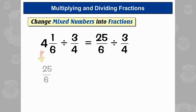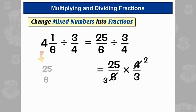Now we can carry on as normal — turn the second fraction upside down and times them. We can cancel down 6 and 4, because they're both even numbers. So now if we times our tops: 25 times 2 is 50. And 3 times 3 is 9. So the answer is 50 over 9.